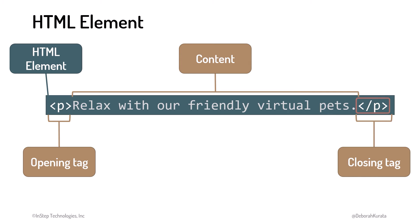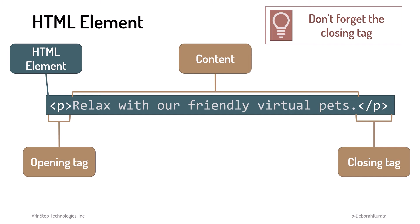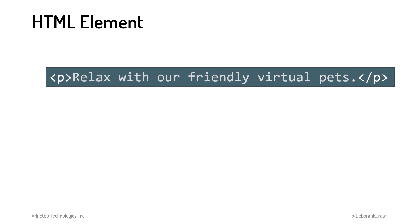The closing tag starts with a left angle bracket and a forward slash, then the name of the element and a right angle bracket. The closing tag defines where the element ends. These tags often come in pairs, so the browser knows the start and end of the element. The opening tag, content, and closing tag together define the HTML element. And here's a tip: don't forget the closing tag. Otherwise, the browser may not display the content as you expect. Most HTML elements have both an opening and closing tag pair.